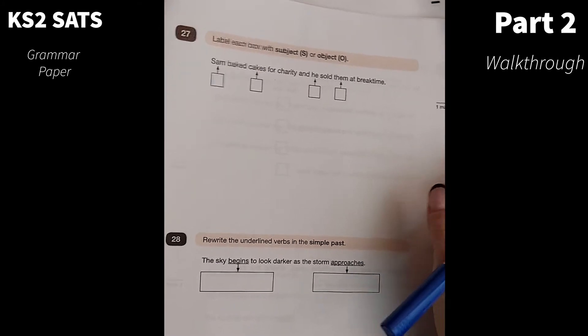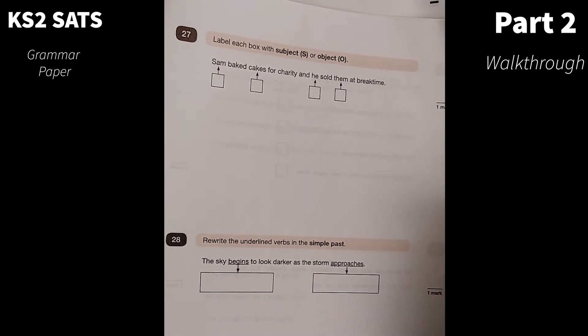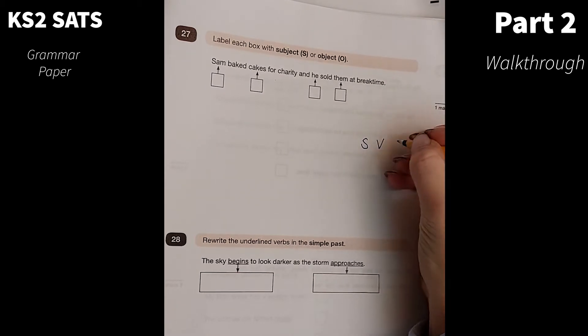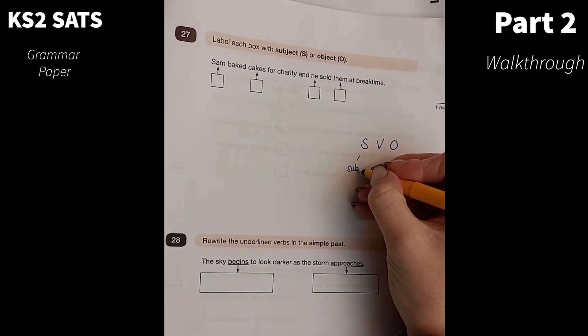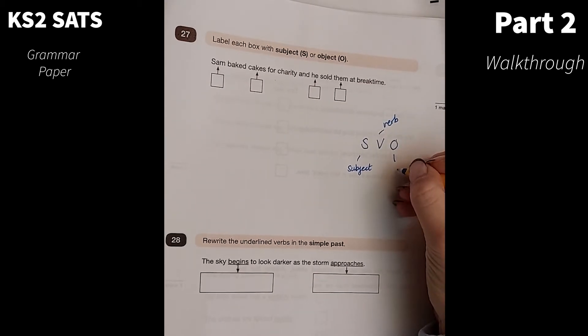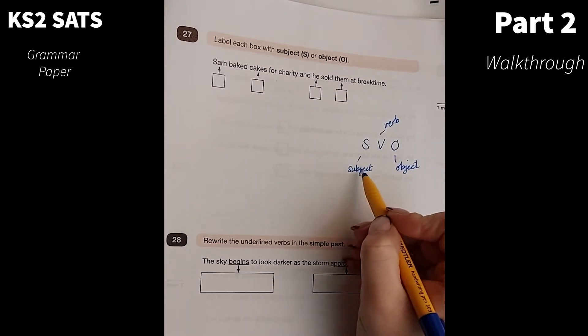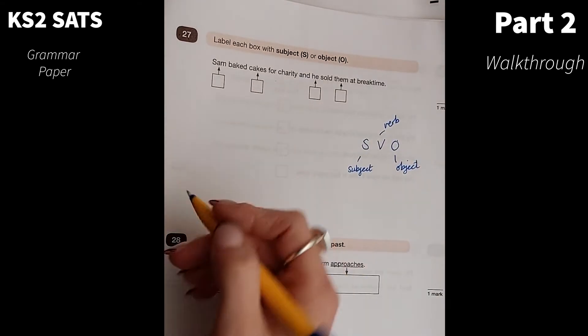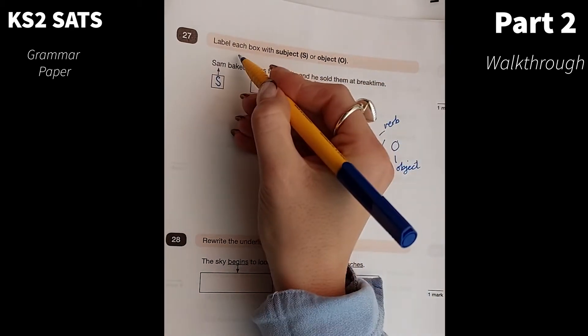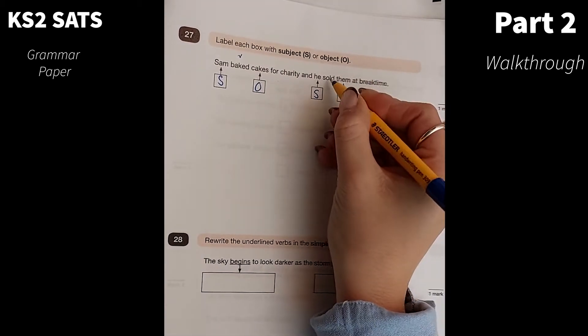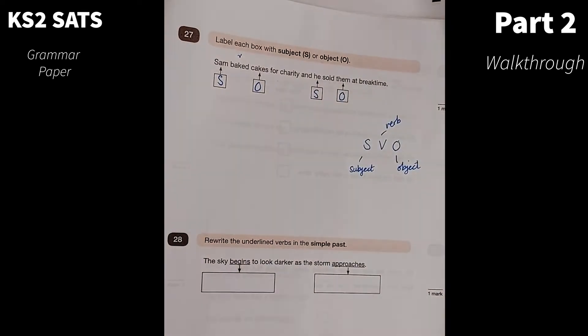Number 27. Label each box with subject or object. Usually when we teach about subject and object, it usually goes in the order SVO. So we usually have subject, verb and object. Apart from if it's in the passive voice, then it's in the opposite order. The subject is the person or thing that's doing the action. Then you have the verb and the object is something that's having something done to it. So Sam would be our subject, bakes would be our verb and cakes is our object. And he would be our subject, sold would be our verb and them would be our object.